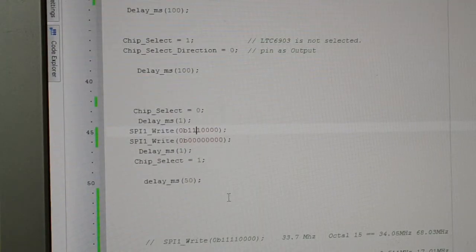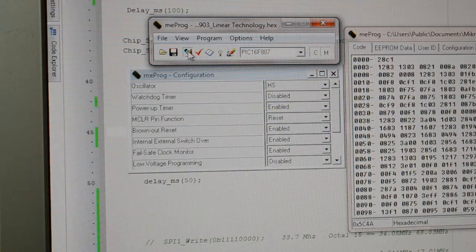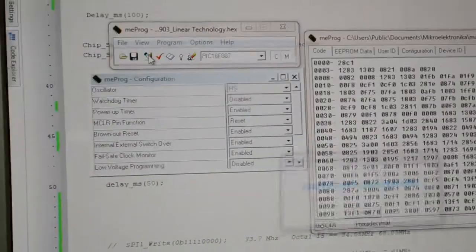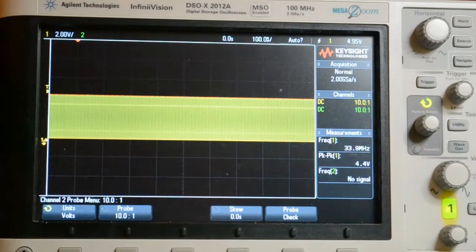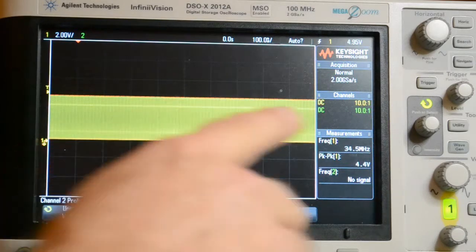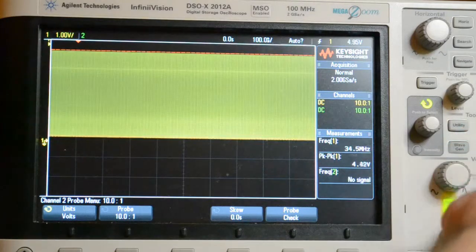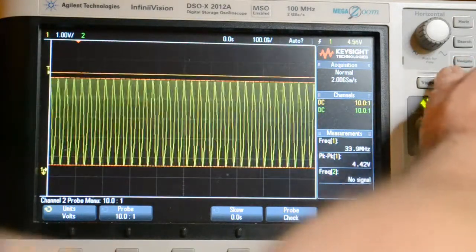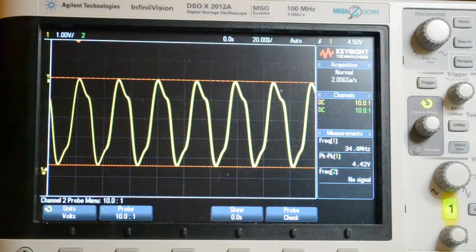Build. If I pull up the microengineering labs programmer, program that, that should be 34 megs, as you see here in the corner, it is. So the amplitude has dropped off a bit. There we are, 34 megs.